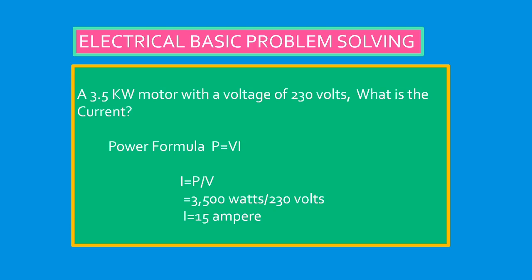Here is an application of the formulas discussed. Example: a 3.5 kilowatt motor with a voltage of 230 volts — what is the current? Power formula: P = V × I, so I = P ÷ V. Since 1 kW = 1,000 W, P = 3,500 watts. Therefore I = 3,500 ÷ 230 = approximately 15 amperes.